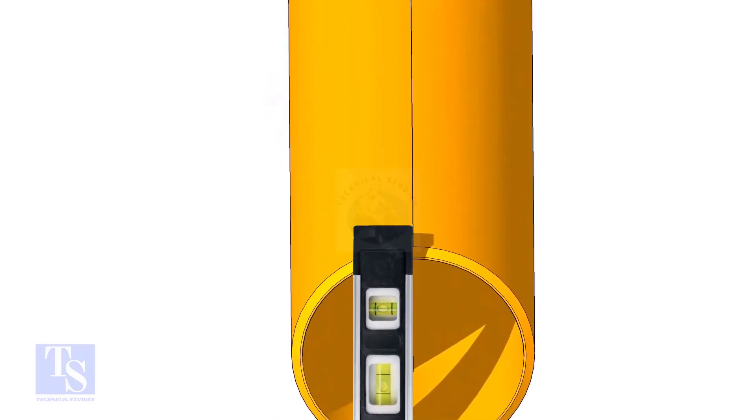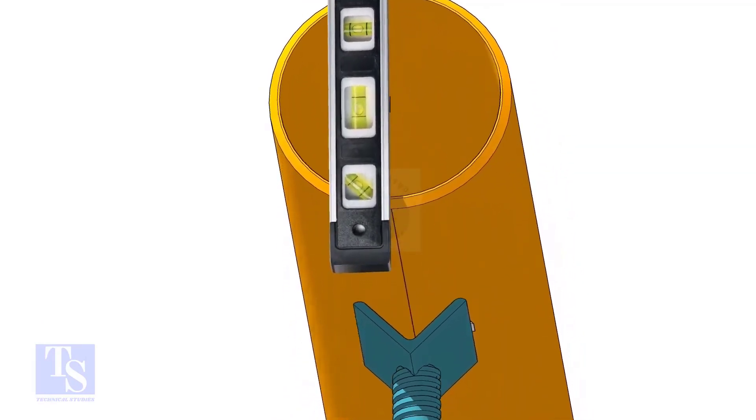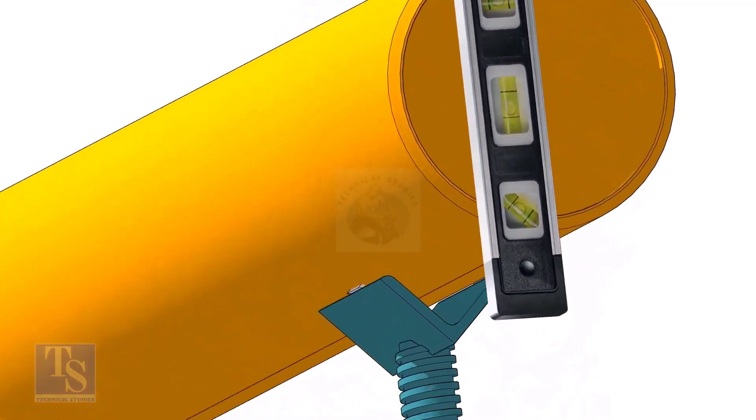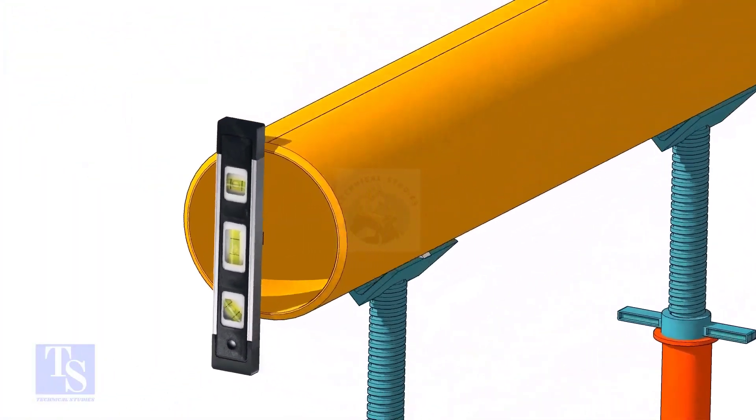Level the pipe horizontally and vertically as shown. After leveling, arrest the pipe to stop it from rotating.